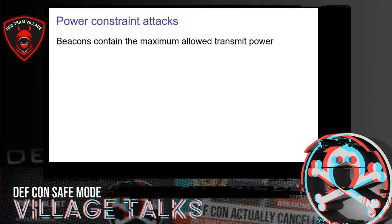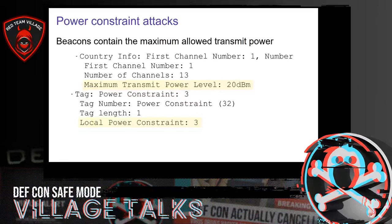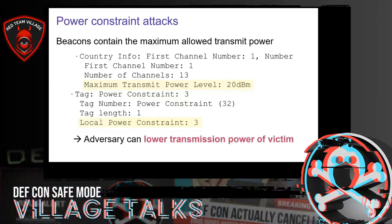One of the first attacks that we discovered is what we call a power-constrained attack. As I already hinted at previously, beacons contain the maximum allowed transmit power that a client should be using. For example, if we look at a beacon in Wireshark, we can see that it contains the maximum transmit power allowed in a certain country, and the beacon can even further lower the maximum transmit power below this regulatory maximum. In other words, an access point can command the client into using a certain maximum transmit power. An adversary can abuse this by forging a beacon that instructs clients into using an extremely low transmission power. This causes the network connection of the victim to become almost unusable, because the frames the victim is transmitting will no longer reach the access point.